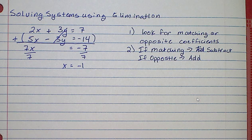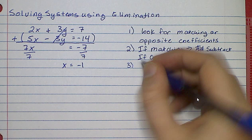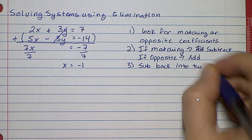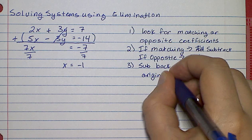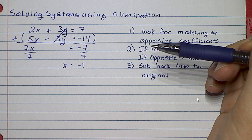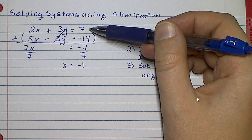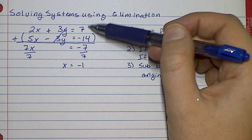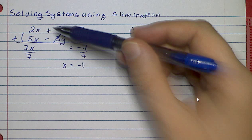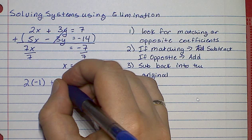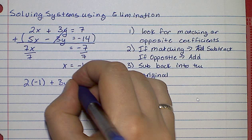Now this is only one of my two solutions — I've got to find the y. So to find the y, I'm going to substitute back into the original — either one, doesn't matter. Personally, I'm going to go with the top just because the numbers are smaller. You could go with the bottom if you wanted to — you're going to get the same answer no matter what. So instead of 2 times x, I'm going to do 2 times negative 1 plus 3y equal to 7.